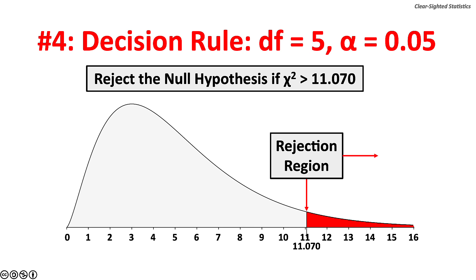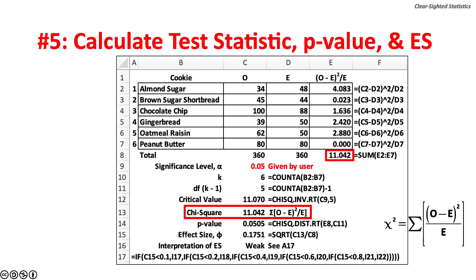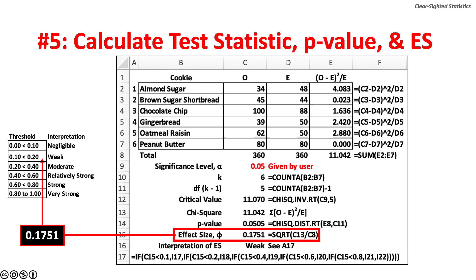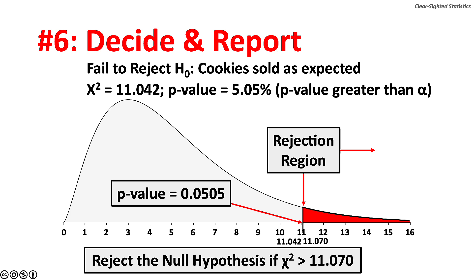Step 5: calculate the test statistic, p-value, and effect size. The Chi-square test statistic is 11.042, just below the critical value of 11.070. The p-value is 5.05%, just above the significance level of 5%. The effect size is 0.1751, or 17.51% — a weak effect. Step 6: given the decision rule, we fail to reject the null hypothesis. Conclusion: the observed distribution of cookie sales among the six recipes matches expectations.